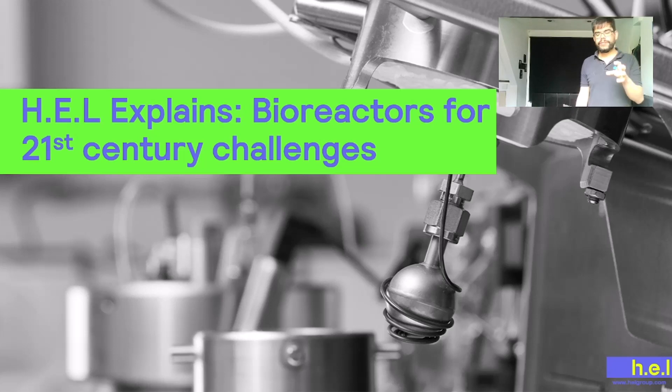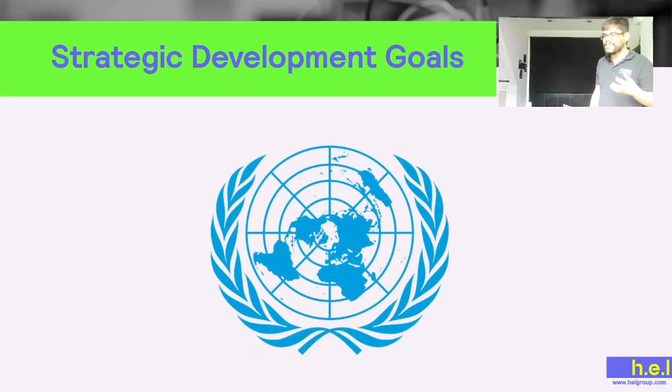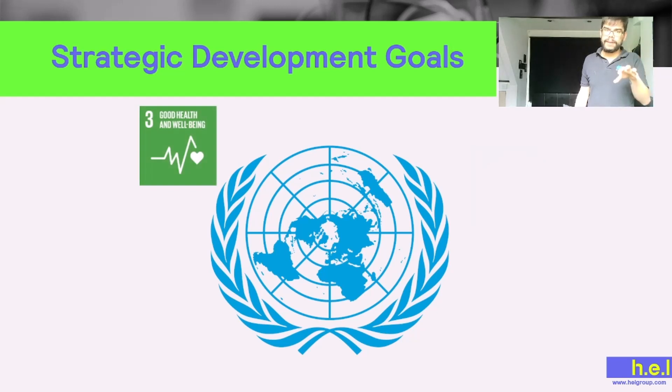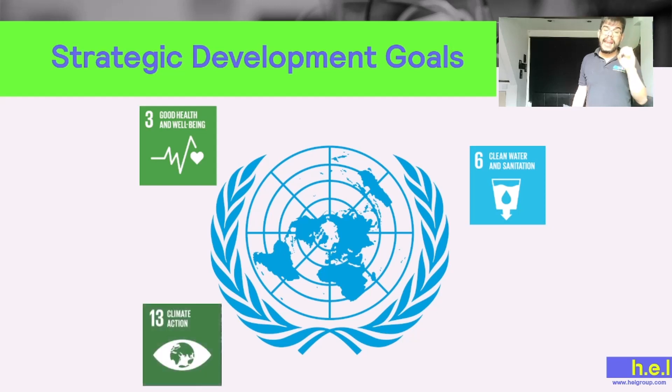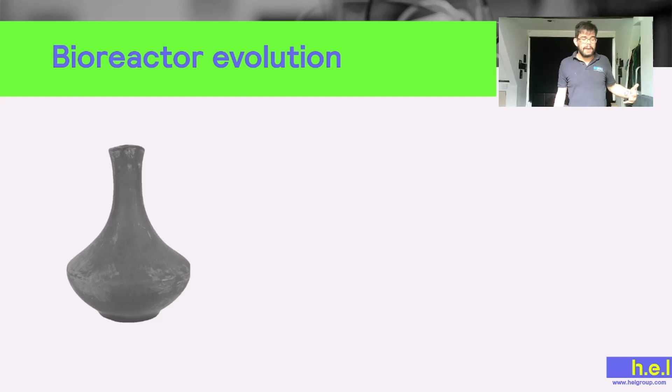What I mean by critical is that even in 2020, the United Nations published a document highlighting how critical the situation is. They wrote 17 points in which humanity needed to improve to achieve a better, safer, and healthier world. Bioreactors can be critical players in at least three of these issues: number three, good health and well-being; number six, clean water and sanitation; and number 13, climate action.